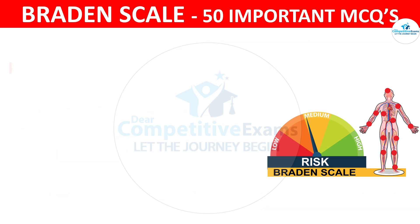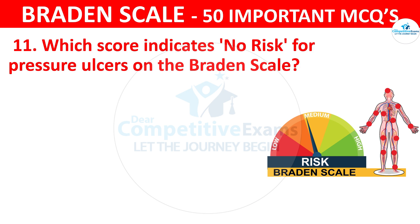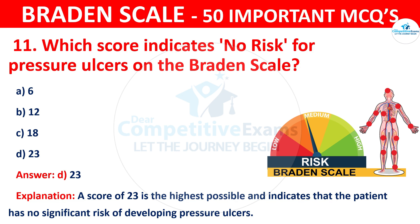Question number eleven: Which score indicates no risk for pressure ulcers on the Braden scale? The options are 6, 12, 18, or 23. The correct answer is D — 23. A score of 23 is the highest possible and indicates that the patient has no significant risk of developing pressure ulcers.